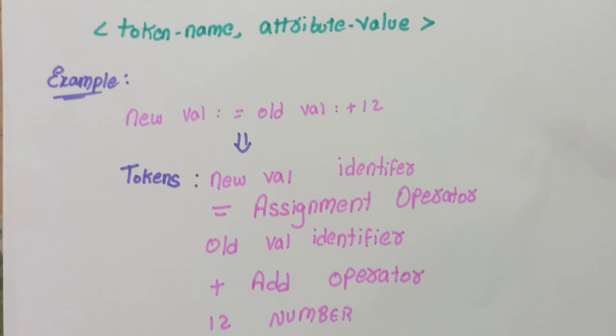Old val is an identifier. Plus is an addition operator. 12 is a number. This is how lexical analysis works.